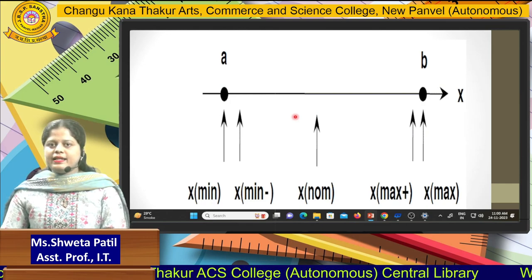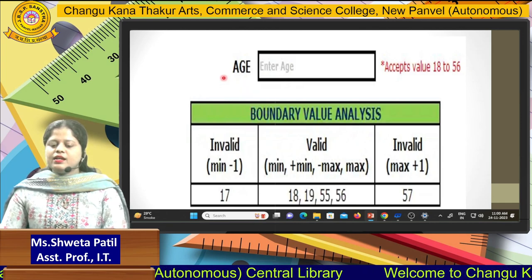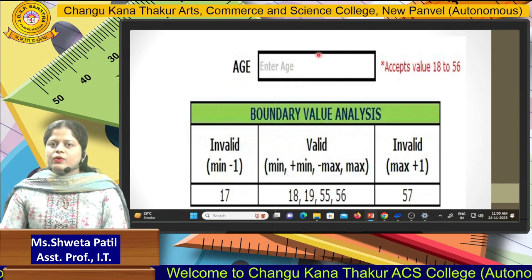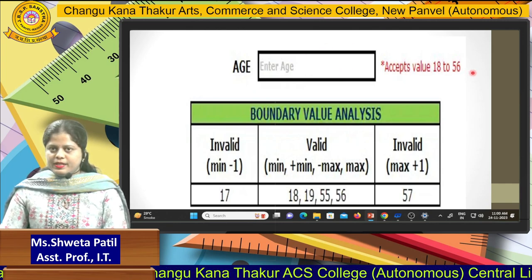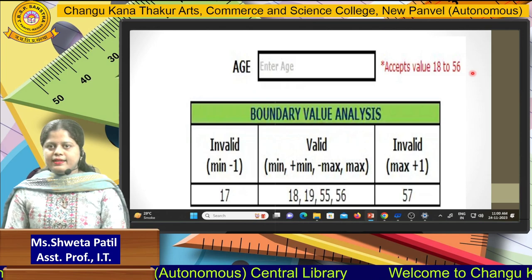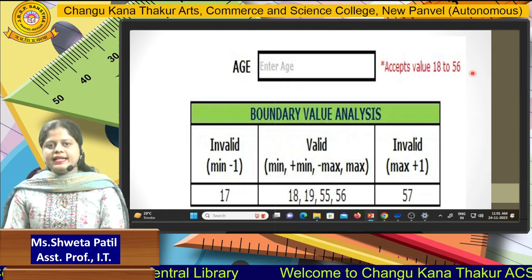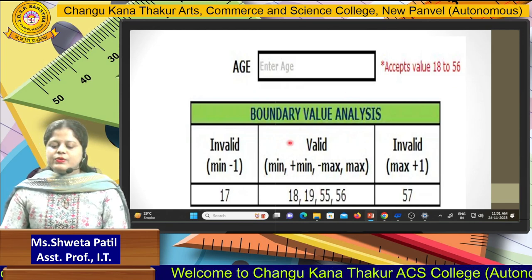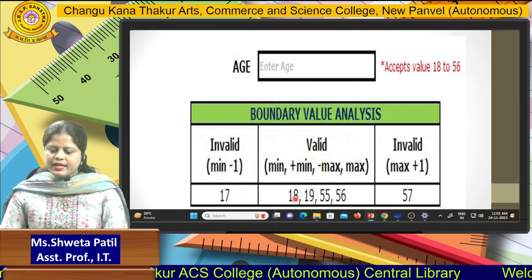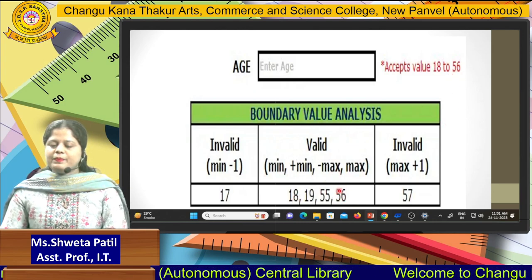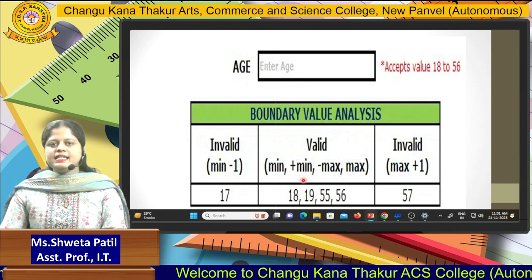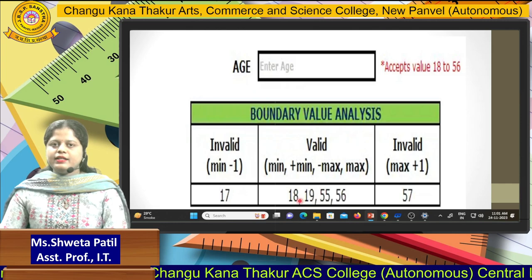Let's discuss the example. The age parameter is given: accept values from 18 to 56. You are going to input values from 18 to 56, so the boundaries are 18 and 56. There are two terminologies — valid cases and invalid cases. 18 is the first boundary and 56 is the upper boundary. Just above 18 is 19, that is minimum plus, so 18 and 19 give us two test cases.